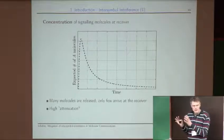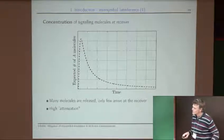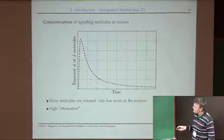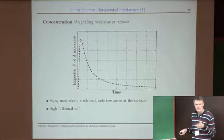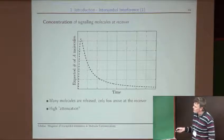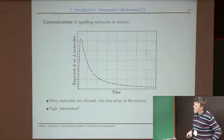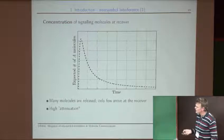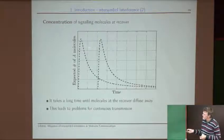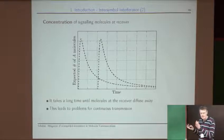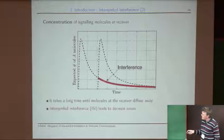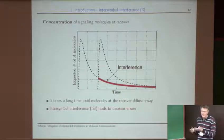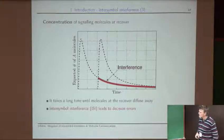If you measure the concentration of molecules arriving at the receiver over time — assuming N_A molecules are released at time zero — you observe no molecules initially, then an increase, then a slow decrease over time. Two degradations occur: many more molecules are released than arrive due to diffusion in all directions, and the slow decay means a second pulse sent later will overlap with the first. This overlap is what we call intersymbol interference, and it leads to performance degradation.